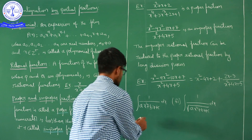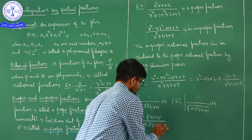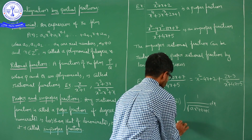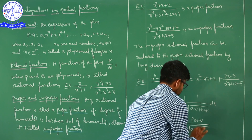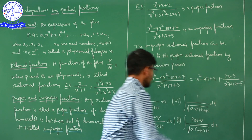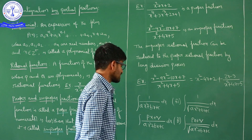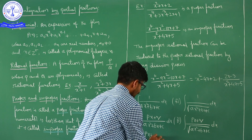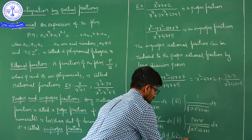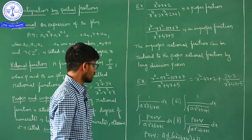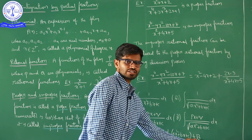The next model problem discussed is integration of (Px + Q) / (Ax² + Bx + C) dx, or integrals of the form ∫(Px + Q) / √(Ax² + Bx + C) dx. The working rule is to write the numerator Px + Q as some constant times the derivative of the quadratic part plus some other constant.